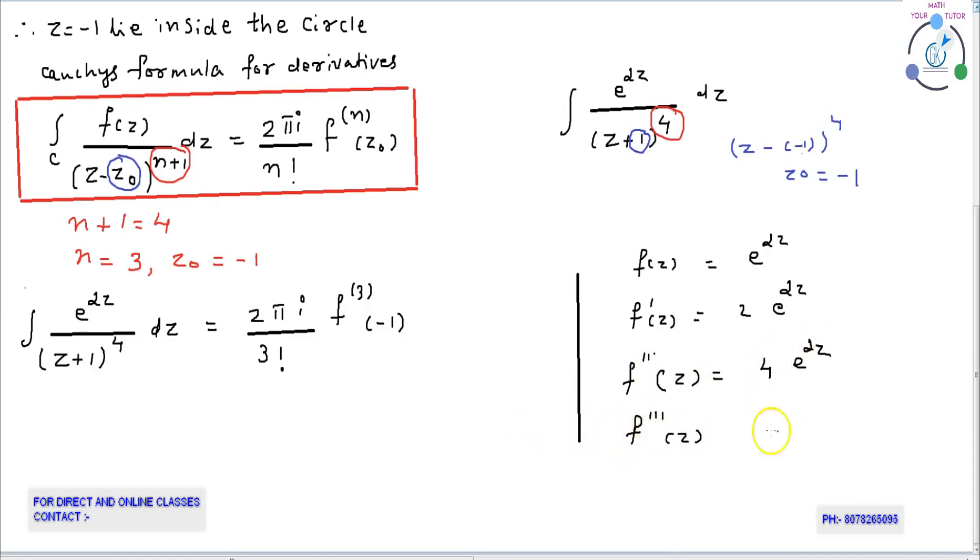Again differentiating, the third derivative is 8 e raised to 2z. Third derivative of f(z) at minus 1 is 8 e raised to minus 2.